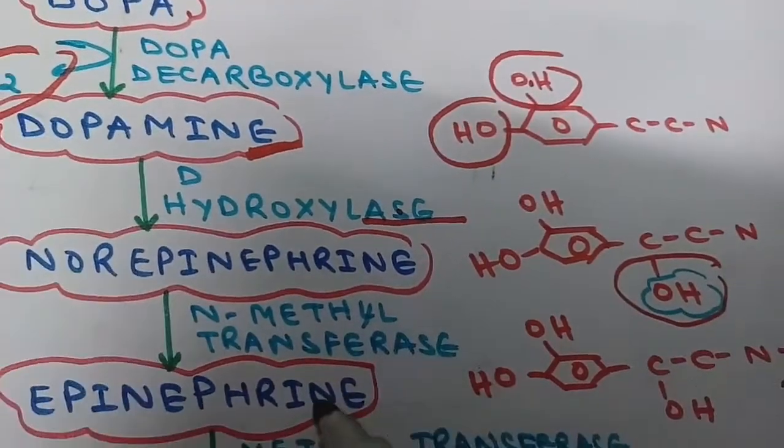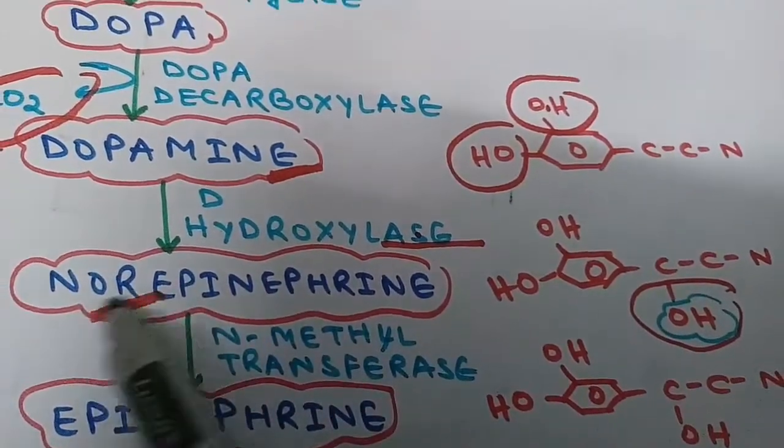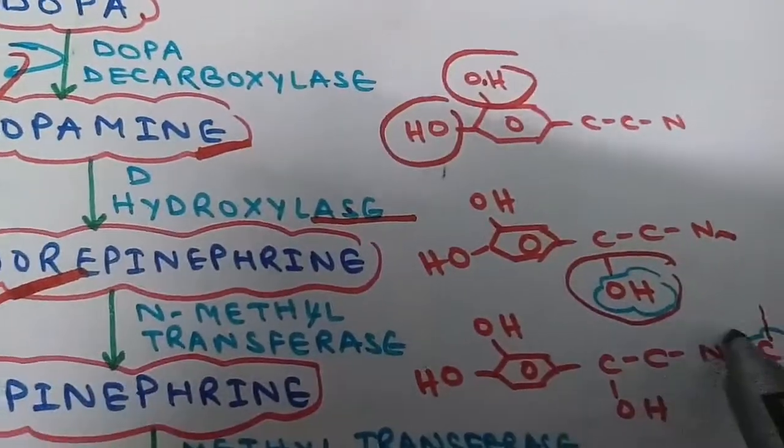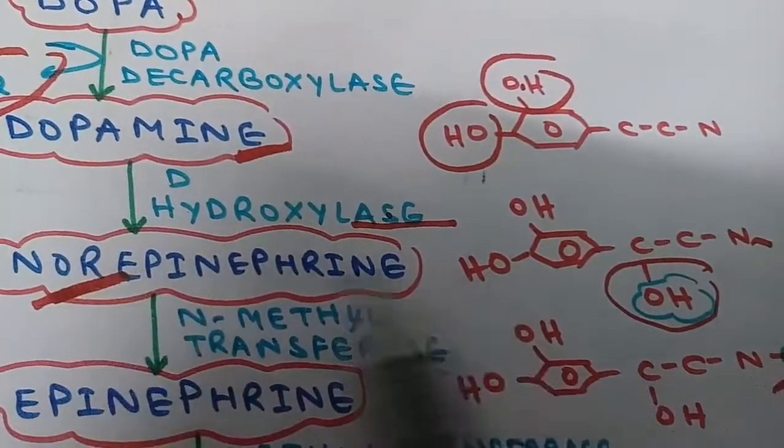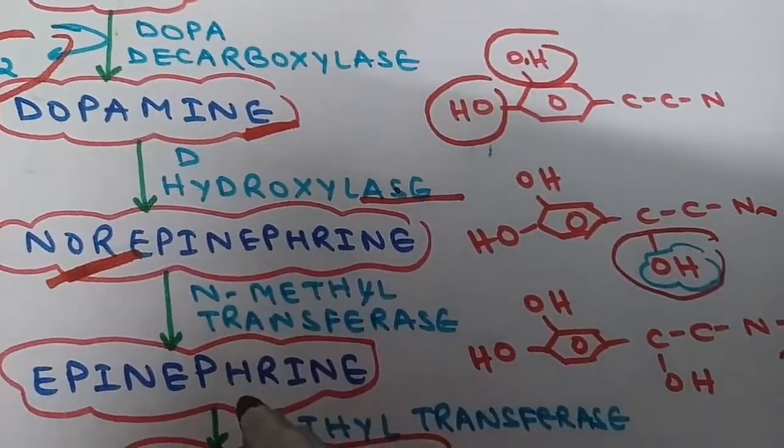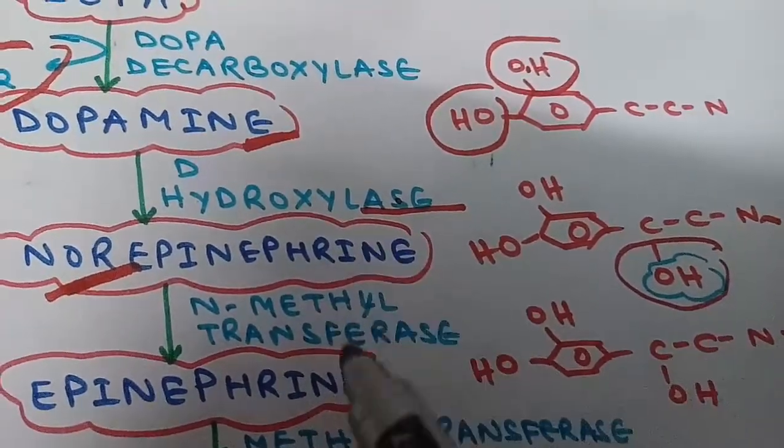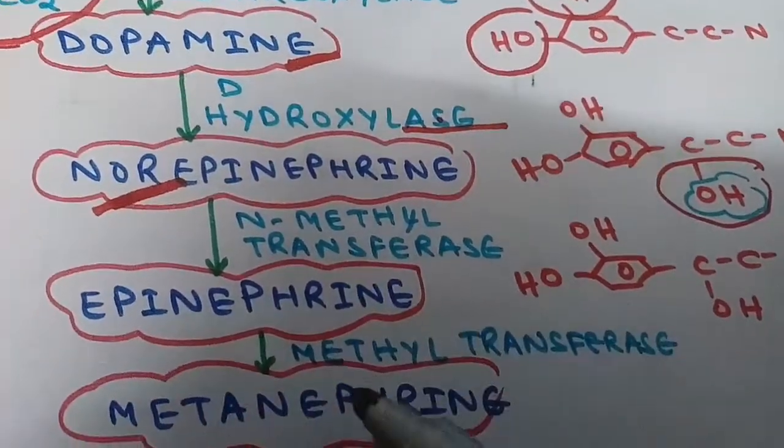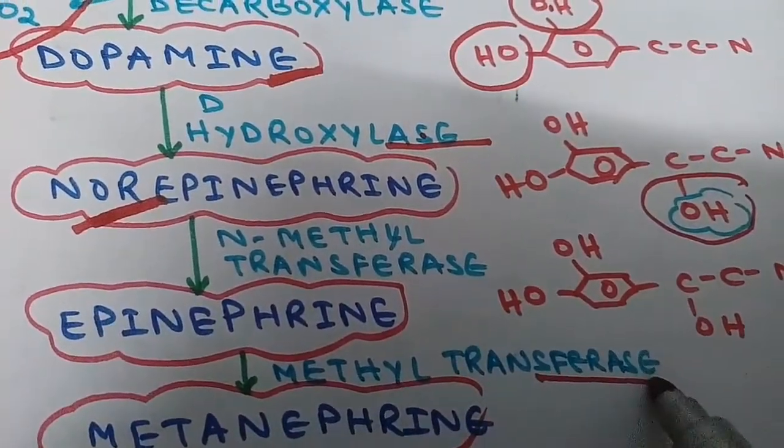The name indicates NOR means absence of that methyl group. Epinephrine has this methyl group, whereas NOR means absence of this methyl group. Norepinephrine is forming epinephrine by transferring a methyl group. The enzyme is N-methyltransferase.